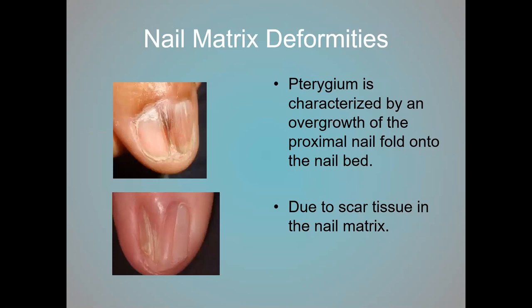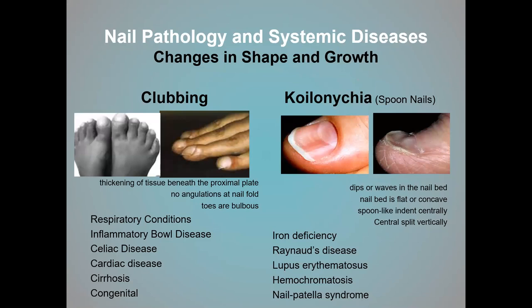The nail matrix itself can have deformities. As stated, if anything is wrong with the nail matrix, the nail plate will come up deformed, and sometimes scar tissue can form in the nail matrix as well. There are many systemic diseases that cause changes in the shape and growth of nails. Two of the more common ones are clubbing — where there is a rounding of the nail bed, toes appear bulbous, common in respiratory conditions, GI issues, cardiac disease, and cirrhosis — and spoon nails, very common in iron-deficient individuals.